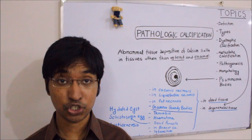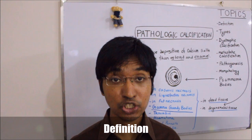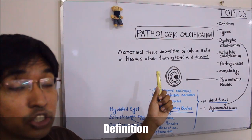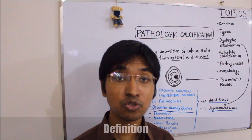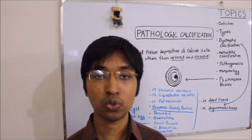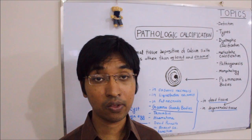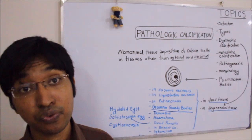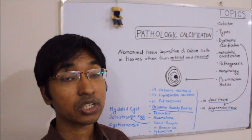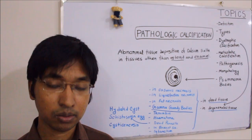First question: what is pathologic calcification? As written in your textbook, pathologic calcification can be defined as abnormal tissue deposition of calcium salts together with small amounts of iron, magnesium, and other mineral salts. In some other textbooks you will also see another definition which states pathologic calcification can be defined as abnormal tissue deposition of calcium salts in tissues other than osteoid and enamel.